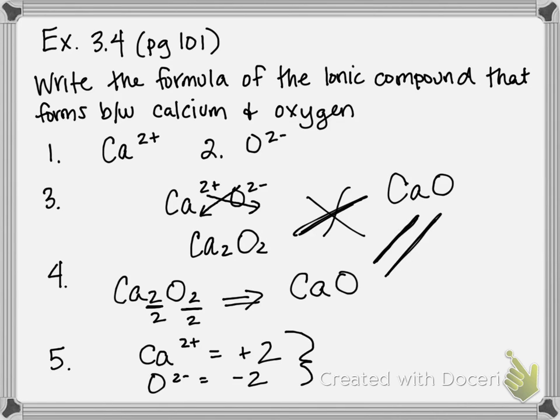Plus 2, minus 2 added together equals 0, meaning our compound is neutral and our formula checks out. So our final written formula for this is CaO.